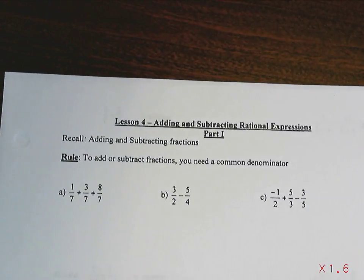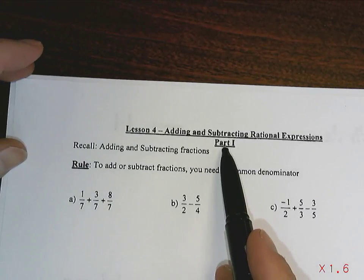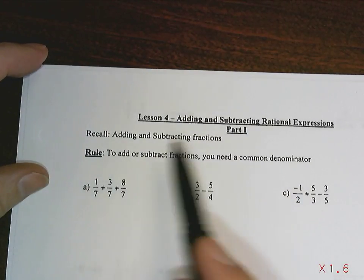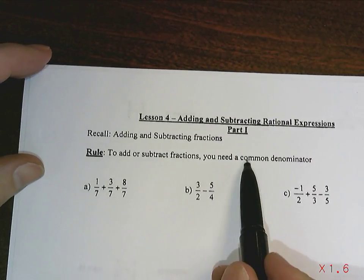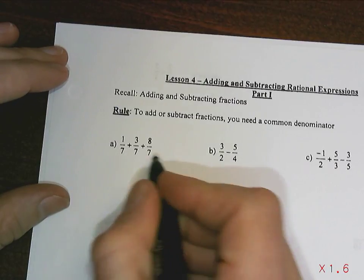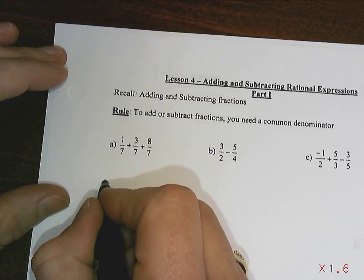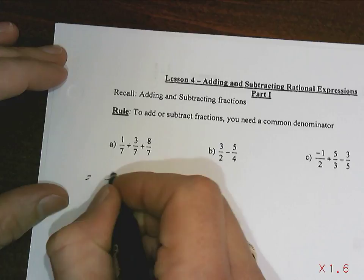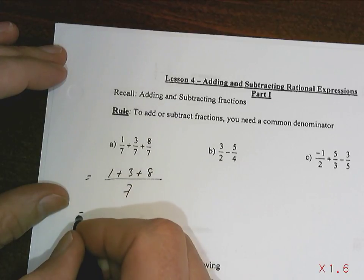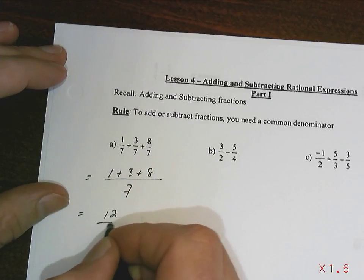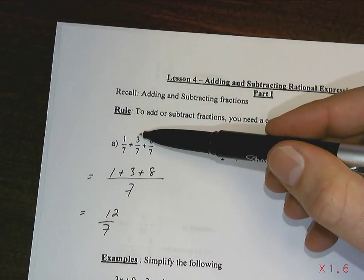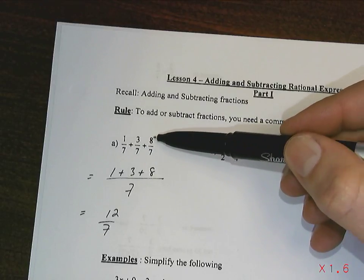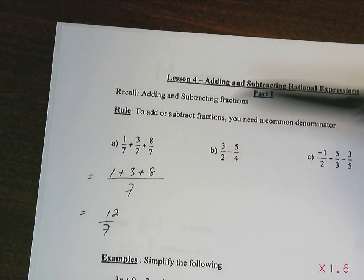Welcome ladies and gentlemen. Today we're going to take a look at adding and subtracting rational expressions, part one. Let's recall that when we add and subtract fractions — not rational expressions but fractions — you need a common denominator. Notice that these three all have the same common denominator of 7, which means adding them is simply a matter of adding all the pieces together. So 1/7 plus 3/7 is 4/7, plus 8/7 is 12/7.